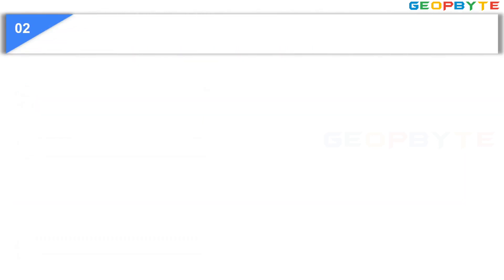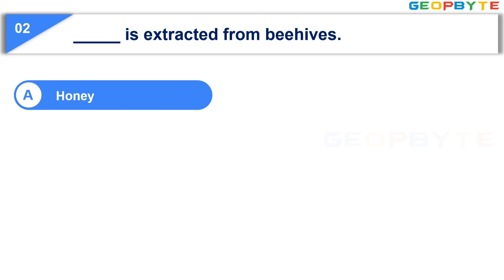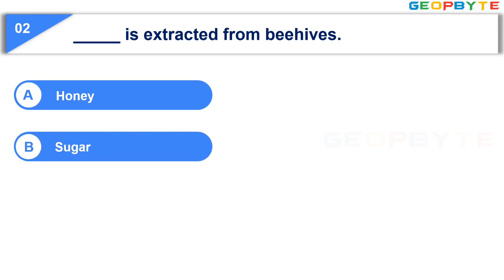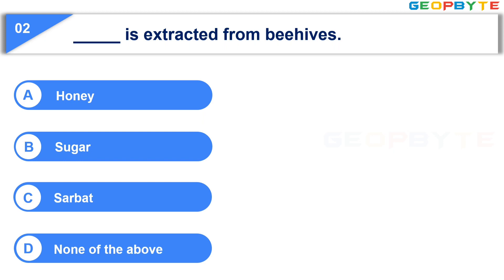Moving to the second question. Dash is extracted from beehives. Option A, Honey. Option B, Sugar. Option C, Sarbat. Option D, none of the above. Your time starts now.